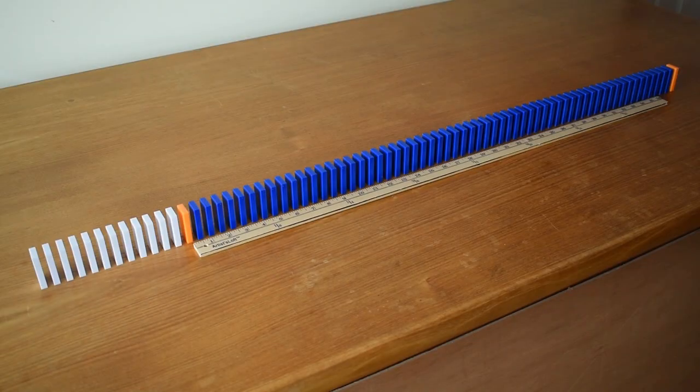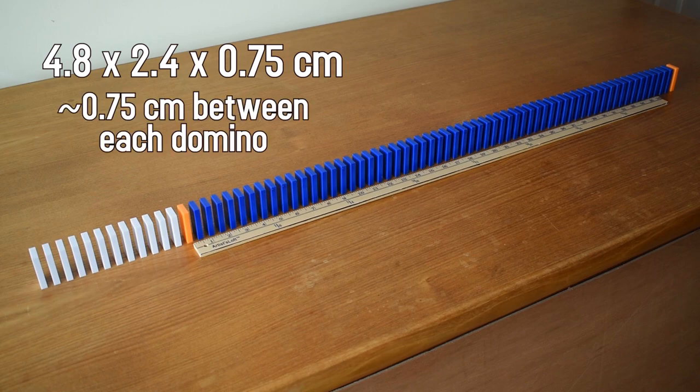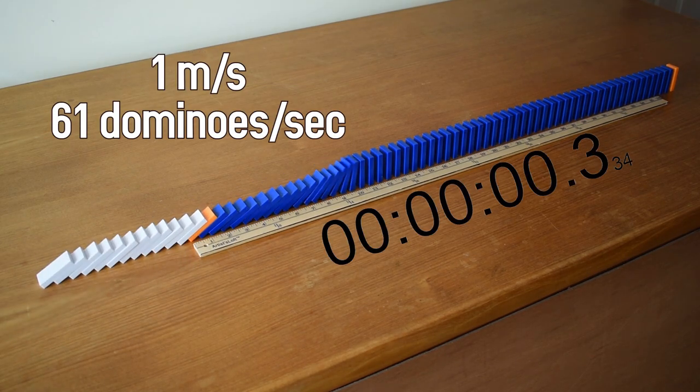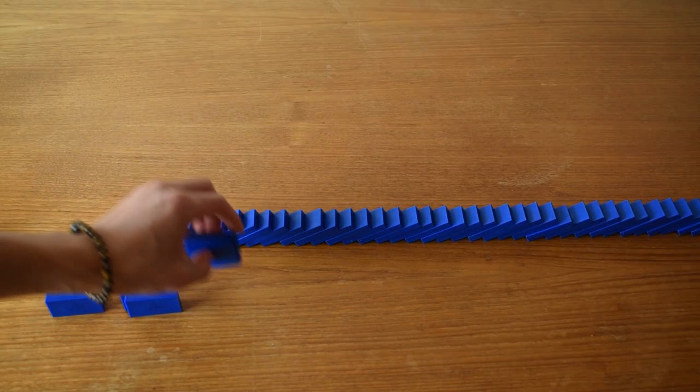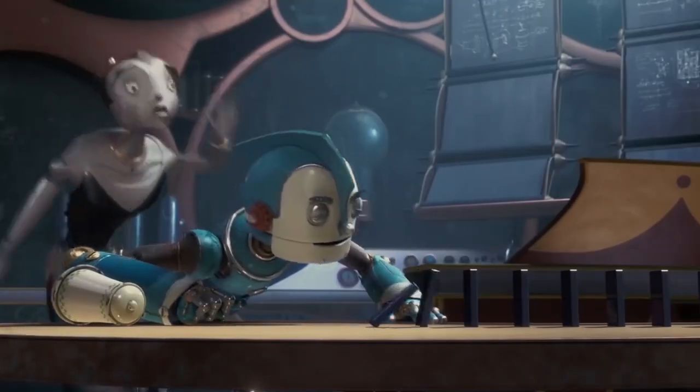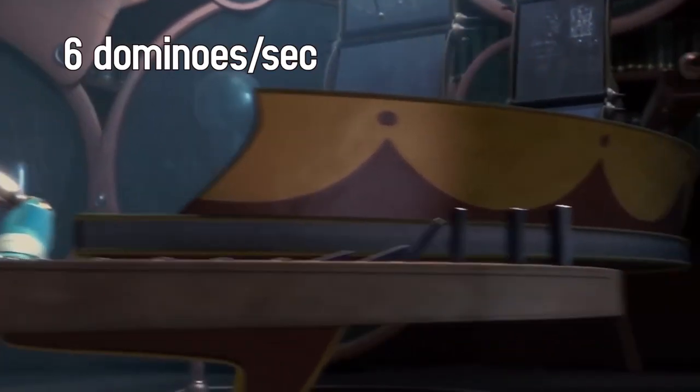Due to the standard professional domino dimensions, and the standard spacing known to all domino builders, dominoes are supposed to fall at 1 meter per second, or 61 dominoes per second. That means if you're animating at 30 frames per second, you could basically topple 2 dominoes per frame. In Robots, the starting line falls at only 6 dominoes per second, which is only about 10% of the real-world speed.